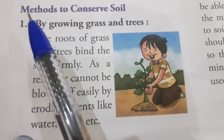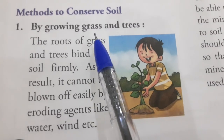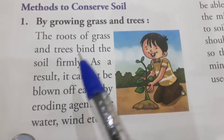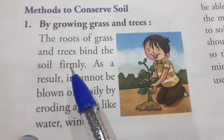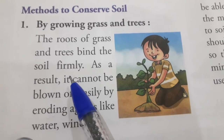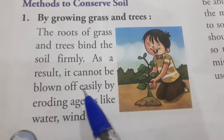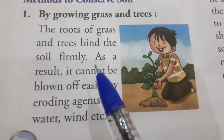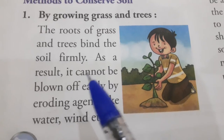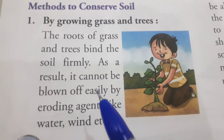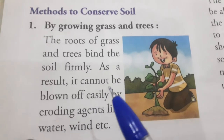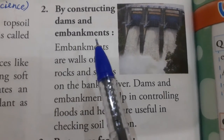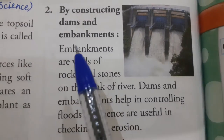Methods to conserve soil — first method is by growing grass and trees. Hume grass aur trees grow karne chahiye. The roots of grass and trees bind the soil firmly. As a result, soil cannot be blown off easily by eroding agents like wind, water, etc. Roots bind karke rakhenghi soil ko, toh upar wali layer ko hatana difficult ho jayega — is tarah se soil ko protect kar sakte hain.